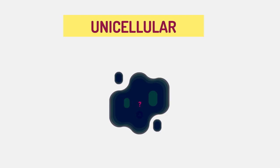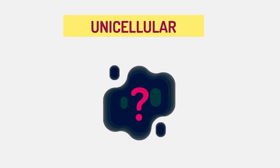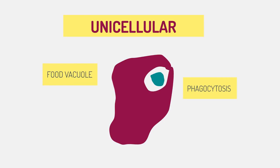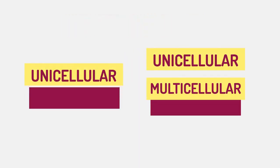But how does a single cell manage nutrition? Usually by phagocytosis, where the food is engulfed and then stored in food vacuoles inside the organism. All prokaryotes are unicellular.